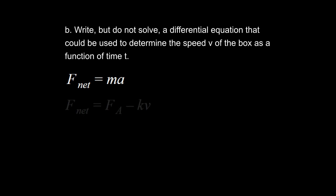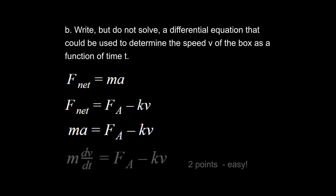The net force is the sum of those forces in the x-axis: a forward force F_A and a backwards force kv, using the variables given to us. We set those equal to each other. The last step that makes it a differential equation is replacing acceleration a with the derivative of velocity with respect to time, dv/dt, so both velocity and its derivative appear in the same equation.